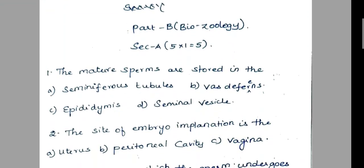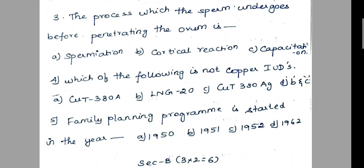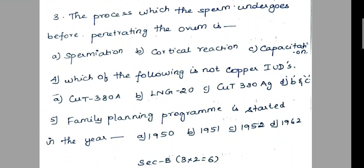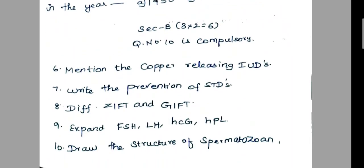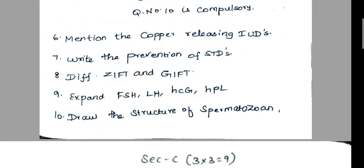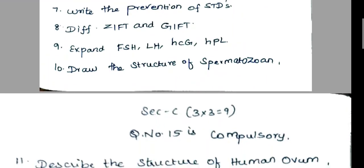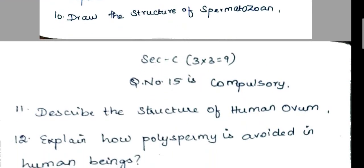Next is Zoology. 5 one-word questions. Next, 2 marks: mention the copper-releasing IUDs. 7th question: write the prevention of STDs. 8th question: differentiate ZIFT and GIFT. 9th question: expand FSH, LH, HCG, HPL. 10th question: draw the structure of sperm — ingestion of spermatozoa and related content.